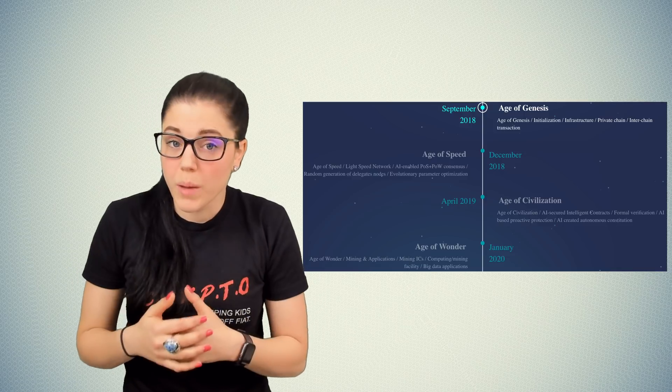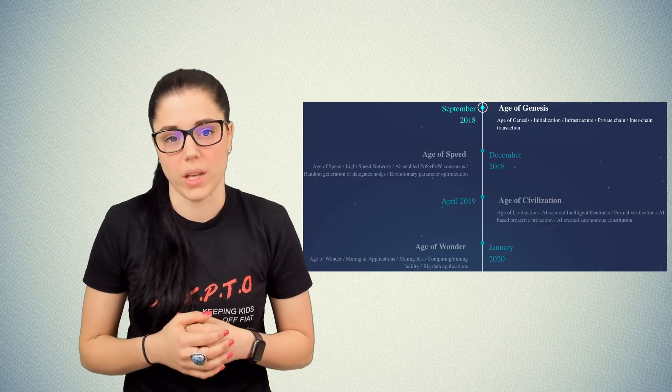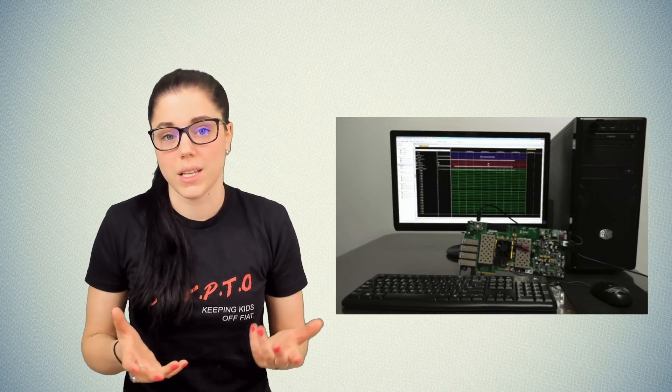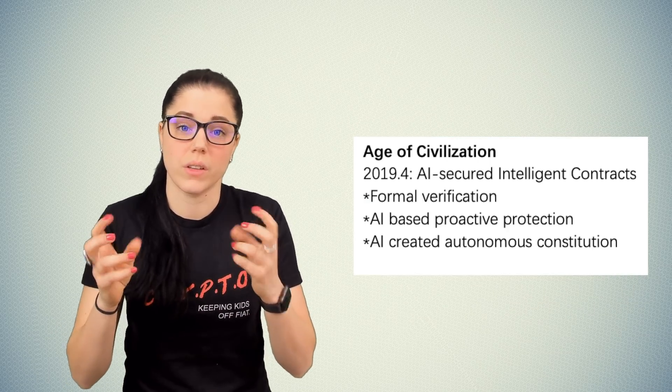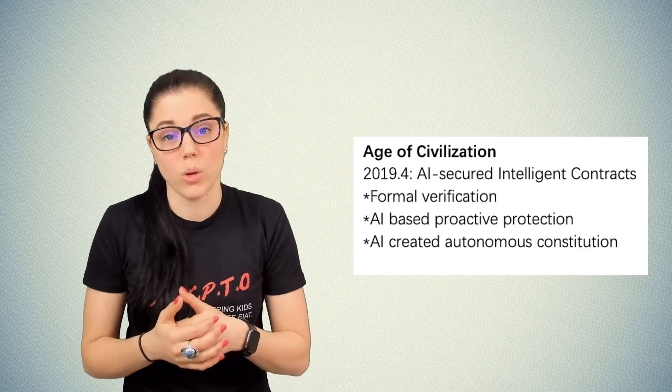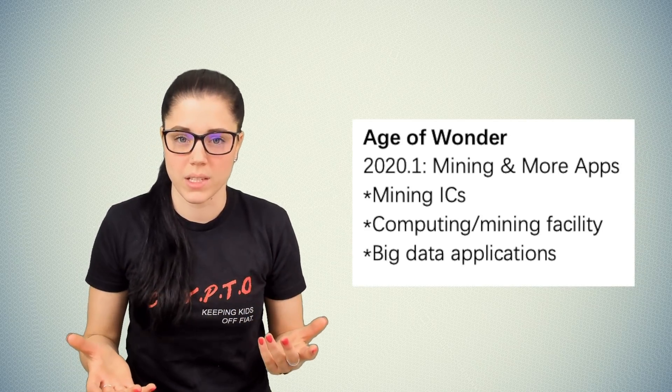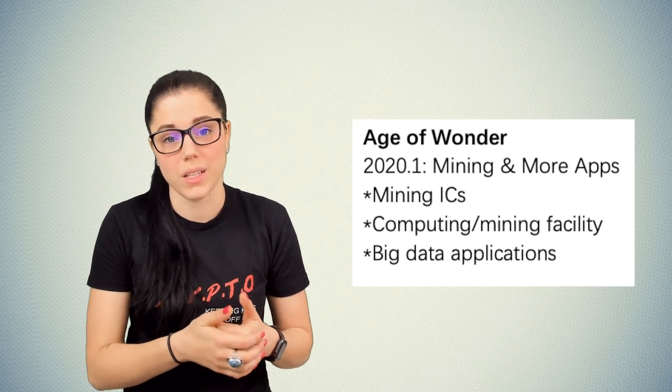What's coming up that we have to look forward to on the roadmap: they have a few things listed. The full mainnet is set to launch in December 2018, which is obviously right around the corner. The Matrix mining machine is set to launch sometime before 2019. March 2019, which on the roadmap they've dubbed the Age of Civilization, has deployment of the AI secured intelligence smart contracts planned. In December of 2019, which is the Age of Wonder, will give us the deployment of mining facilities and big data applications.